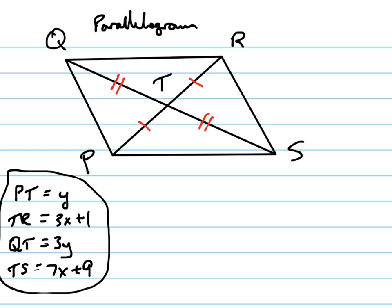So I can set PT, which is y, equal to TR, which is 3x plus 1. I'm going to set those equal to each other. And I can also set QT, which is 3y, equal to TS, which is 7x plus 9, which means I have a system of equations.